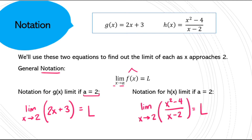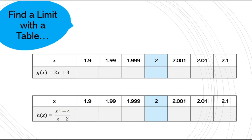We have lots and lots of notation in calculus, so try and memorize some of them. This slide is representing just what we drew there — the limit as x approaches 2 of these various functions. I'm going to write g(x) first. What we're doing here is choosing values to see what the behavior of this function is as I get close to 2.